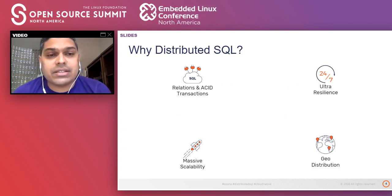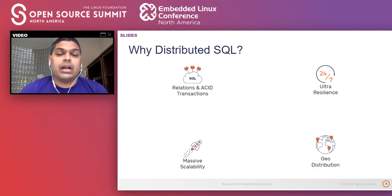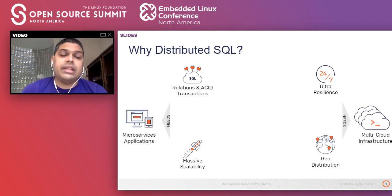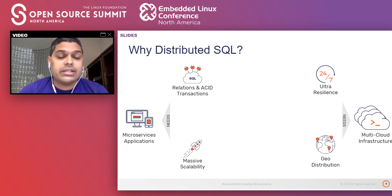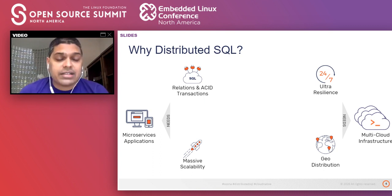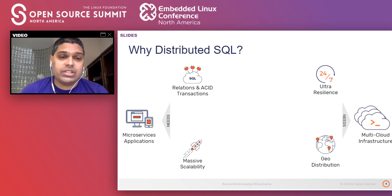Last but not the least, it's about the ability to geographically distribute the data across multiple regions or multiple data centers, so that our applications can be served with low latency queries. Now, why is this distributed SQL architecture so important? The reason is twofold. It comes first from the needs of today's applications, which are increasingly becoming microservices-based applications. These applications are going through a fast, really high amount of iteration and changes.